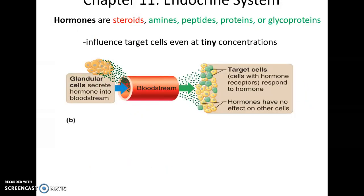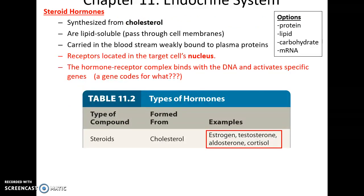Hormones can be steroids or non-steroids, which include amines, peptides, proteins, or glycoproteins — all derivatives of amino acids or groups of amino acids. You only need a tiny amount because they're only targeting specific cells. Steroid hormones originate as cholesterol. They are lipid-soluble, so they can pass through the cell membrane, and they must be carried on plasma proteins because lipids are hydrophobic. Steroids end up targeting receptors in the target cell's nucleus, thereby affecting which genes are activated.